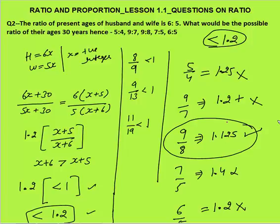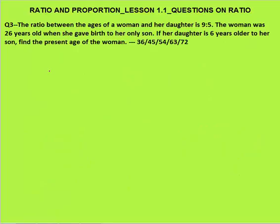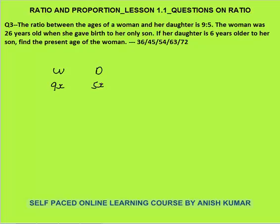Third question: the ratio between the ages of a woman and her daughter is 9:5, so assume women's age is 9x and daughter's is 5x. The woman was 26 years old when she gave birth to her only son — so when the son was born, his age was zero and the woman was 26. The daughter is 6 years older than the son, meaning when the son was zero, the daughter was 6.